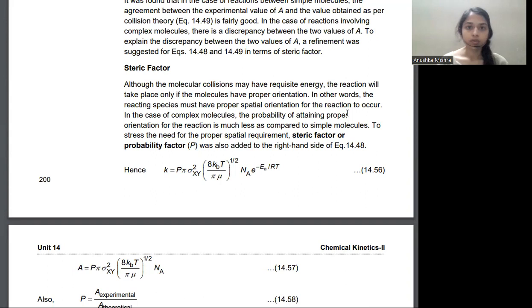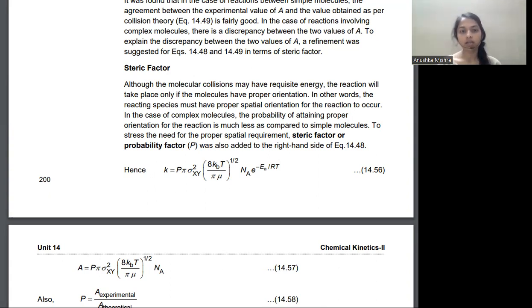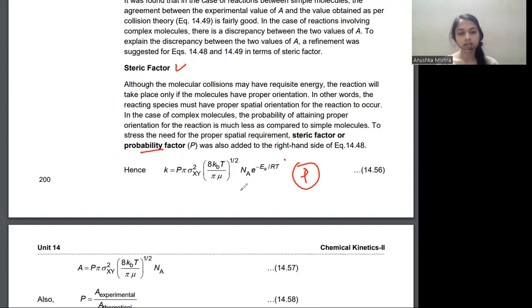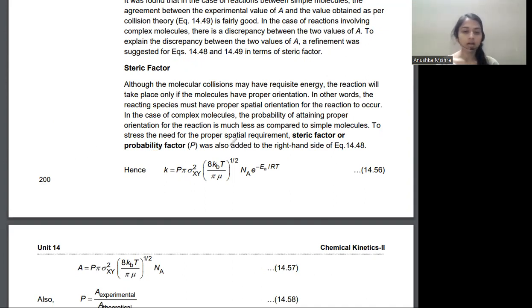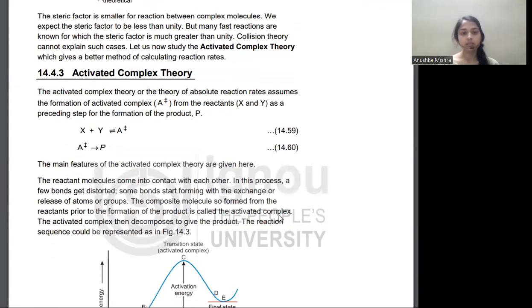When we studied Collision Theory, we said that if there is a collision between molecules, there is an orientation factor that is very important. In the Chemical Kinetics playlist, we studied Collision Theory, which had a steric factor or probability factor in the equation. If there are simple molecules, then the collision is easy. But if there are complex molecules, then the orientation factor affects the probability factor. So there was a steric factor and a probability factor introduced by Collision Theory.